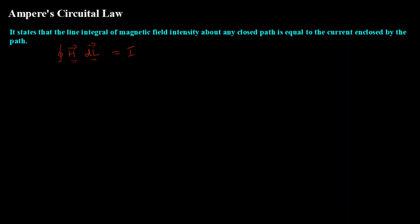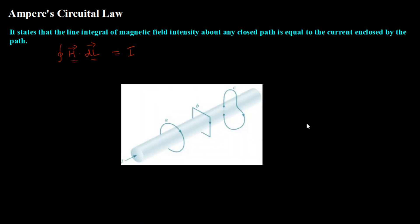There are a few things which you should keep in your mind before applying Ampere's Circuital law. Let us discuss the three significant points you should remember. Consider a current carrying conductor with three paths A, B, and C used to enclose this conductor so that we can apply Ampere's Circuital law. The first thing to remember is: if you want to apply Ampere's Circuital law, you have to make sure that the current distribution is symmetrical. We can apply it if and only if the distribution of current in the conductor is uniform.